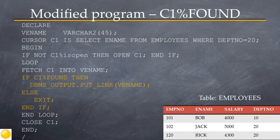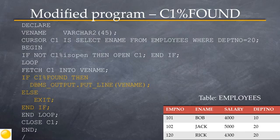%FOUND is the opposite of %NOTFOUND. So as long as a row from the cursor is fetched you would want to process the values generated by the fetch; otherwise you want to exit the loop. In the example, immediately after the fetch is done a check is performed using an IF c1%FOUND condition — if true you display the name, else you exit from the loop.